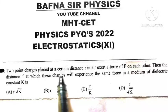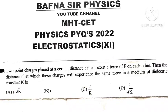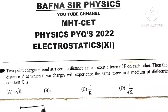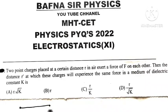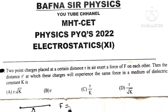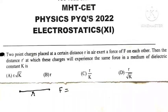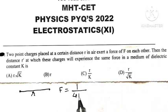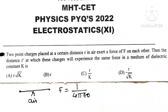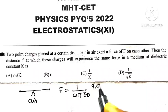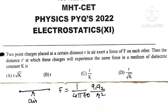Two point charges are placed at a certain distance in air, and the force acting on them is F = (1/4πε₀) × Q1Q2/R². Here, permittivity of free space is used because air is the medium.